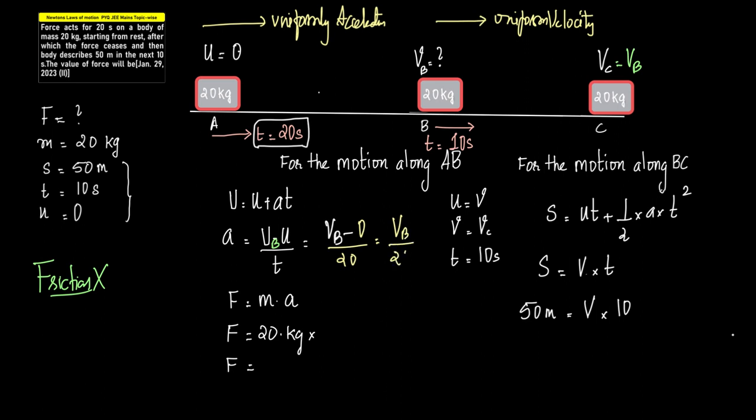For the next half, for the motion along BC, initial velocity is vb, final velocity is also vb, which means acceleration is zero. This term vanishes. I'll repeat it: initial velocity is equal to final velocity, so vb is equal to vc, and therefore we can say that acceleration is equal to zero.